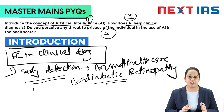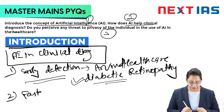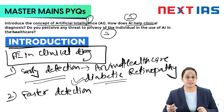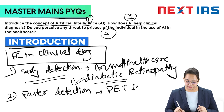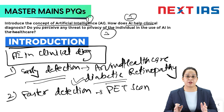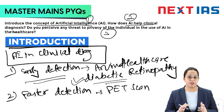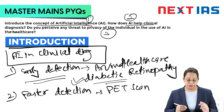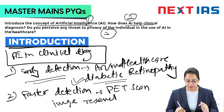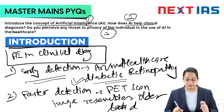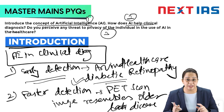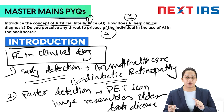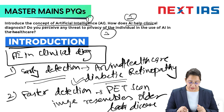The next point is faster detection. AI can detect a disease in a quicker way so treatment can begin in the earlier stages. Take the example of a PET scan — the software already contains data of numerous patients. When a new patient's scan image arrives, it is compared with older data. If the image resembles data associated with a particular disease, a quicker diagnosis is made and treatment starts faster. For example, malignant tumors can be detected this way.